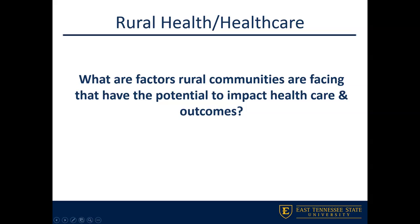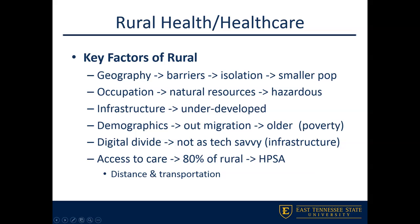Some questions to consider: what are the factors having potential healthcare impacts and outcomes on our rural population? The key ones I want to focus on are geography, occupation, infrastructure, demographics, digital divide, and access to care. We'll look at these one by one and go into more detail on each.